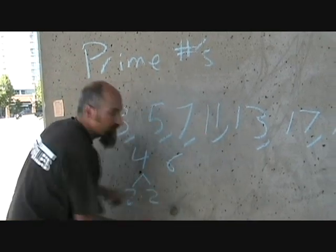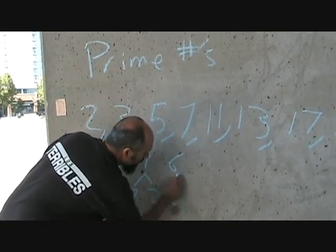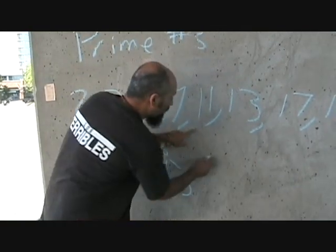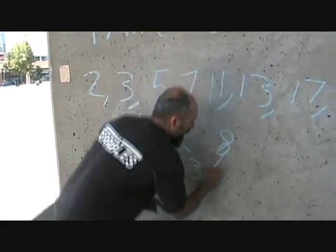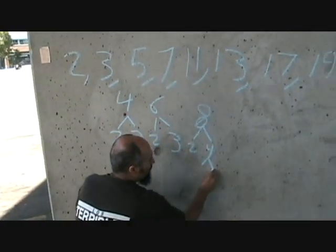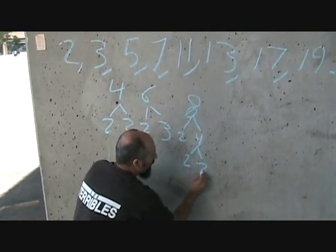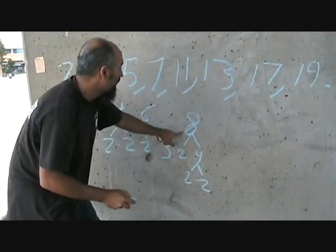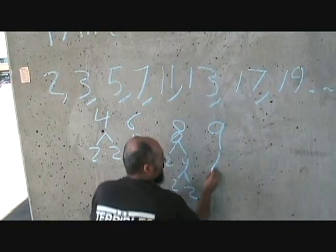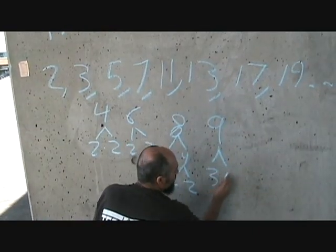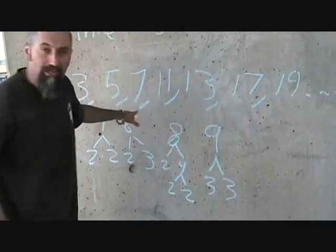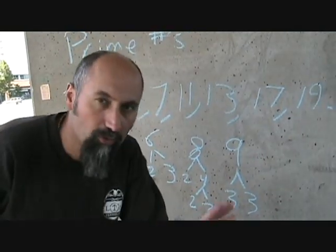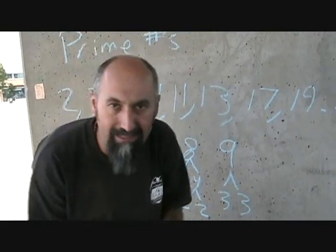Then you've got seven. Eight is two times four, and four is two times two — so eight is not a new number either. Nine is three times three. So if you do this all the way up to the number 20, you're going to find out there aren't 20 numbers. There's only nine numbers.